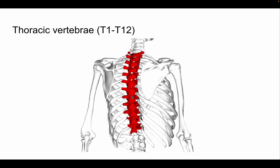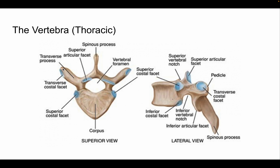You can see that each thoracic vertebra articulates with some sort of rib. Looking at it from the superior or transverse view, going from superior to inferior: first we have the spinous process. Then we have the lamina — this bounding area here is the lamina. And then we have the transverse processes, which go on the transverse plane and transect the body.